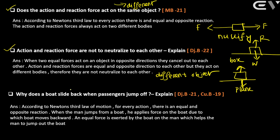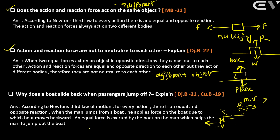Why does the boat slide back when a passenger jumps off? When the passenger jumps with a certain velocity, by the conservation of momentum, the boat moves in the opposite direction. The total momentum before and after remains conserved — that is the conservation of momentum.